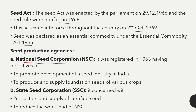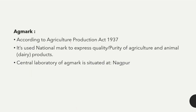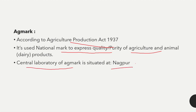Seed production agencies: the first is National Seed Corporation, registered in 1963 with objectives to promote the development of seed industry in India and to produce and supply foundation seeds. Second is State Seed Corporation, concerned with production and supply of certified seed to reduce workload of NSC. Third is Agmark — according to the Agriculture Produce Act 1937, it uses national mark to express quality and purity of agriculture and animal products. The central laboratory of Agmark is situated at Nagpur.